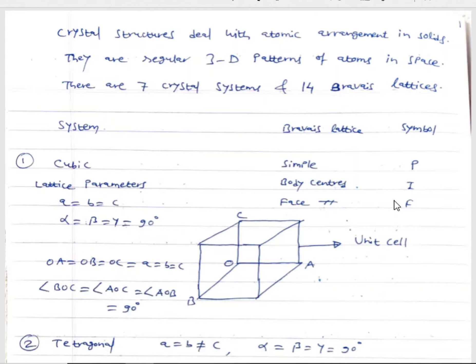The cubic crystal system has a small unit cell. A unit cell is the smallest unit which, when repeated indefinitely in 3D directions, will generate the space lattice. The lattice parameters A, B, C — all axial lengths — are equal to each other. Similarly, the interaxial angles alpha, beta, and gamma are also equal to each other.